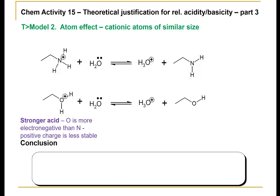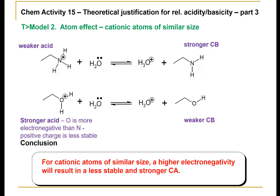Therefore, our protonated oxygen is a stronger acid. Oxygen is more electronegative than nitrogen, so the positive charge is less stable and this is a stronger reactant. The protonated amine is a weaker acid, as that positive charge is not quite as destabilized. The amine would be a stronger conjugate base, and the alcohol would be a weaker conjugate base. So in conclusion, for cationic atoms of similar size, the higher electronegativity will result in a less stable and stronger conjugate acid.